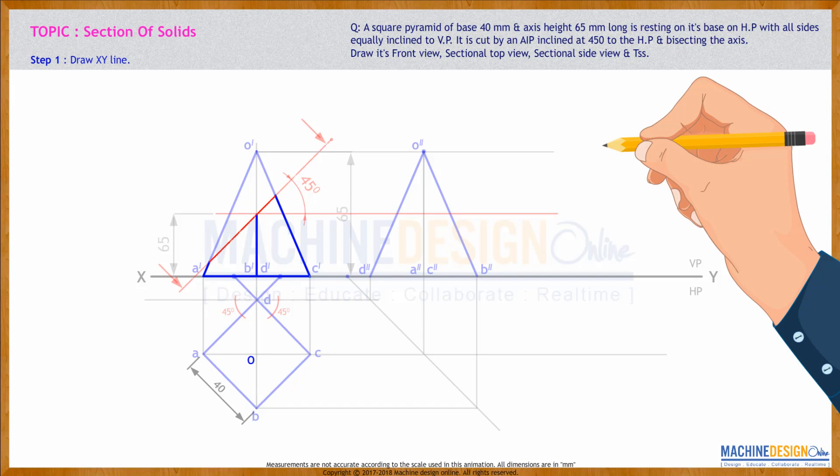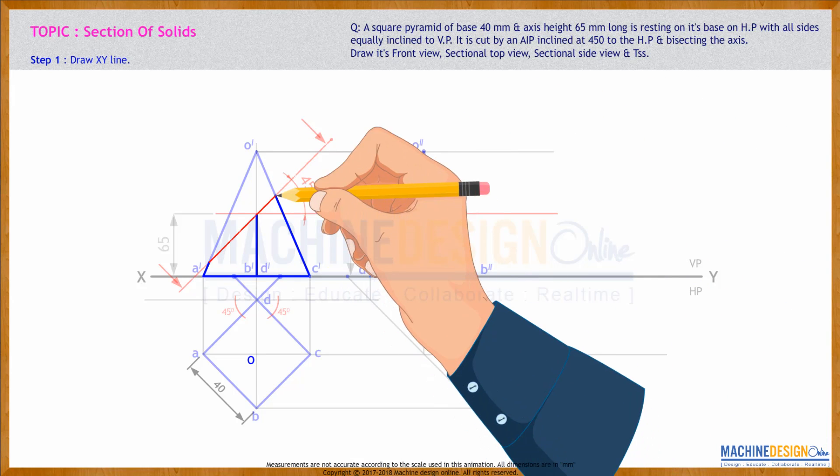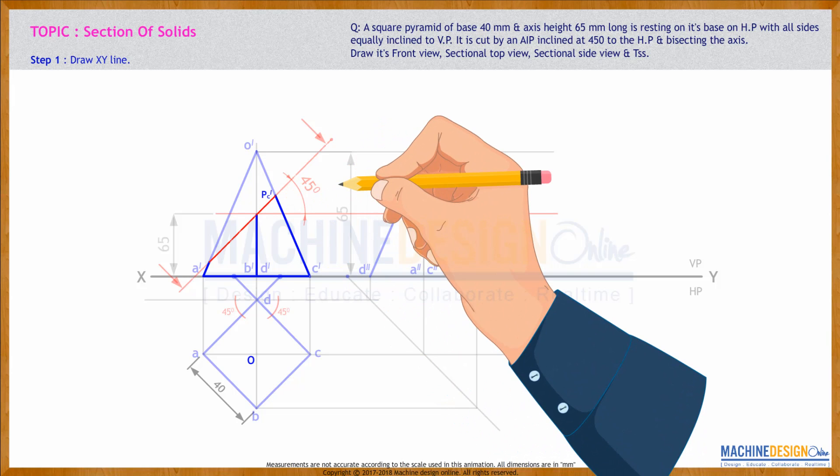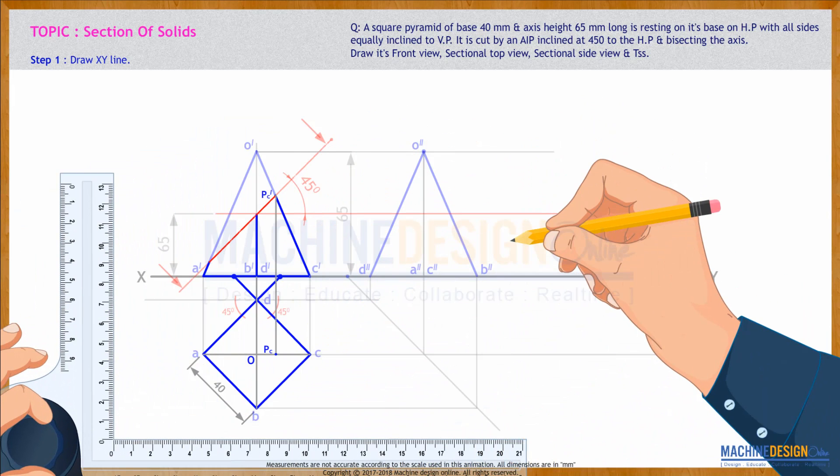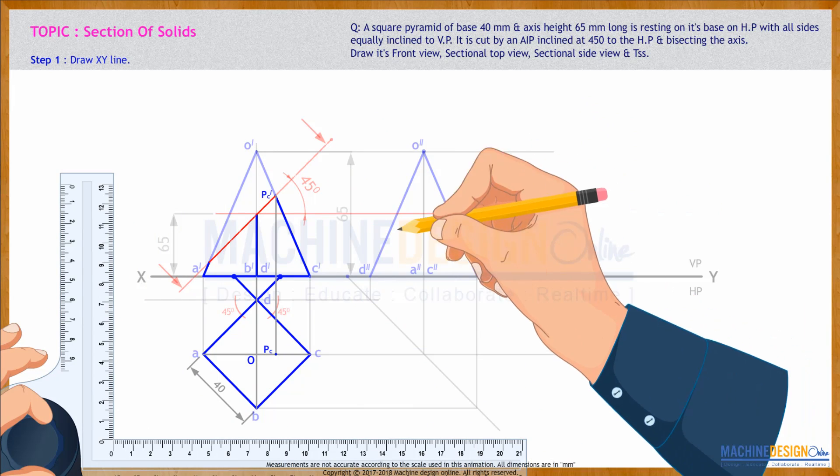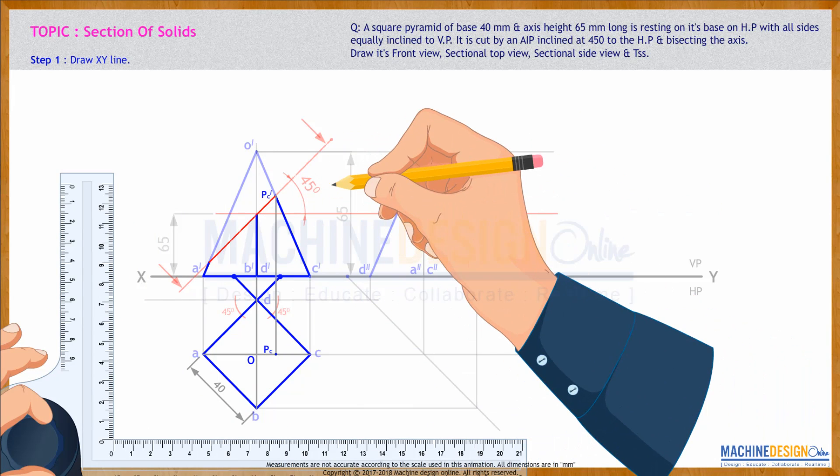This is the lower portion which is dark. Now if you see how many points we got: O dash C dash, so wherever it is cutting O dash C dash, that is point PC dash. That you can project straight down. So here we got point PC. Now if you see this point, this is point PP dash.